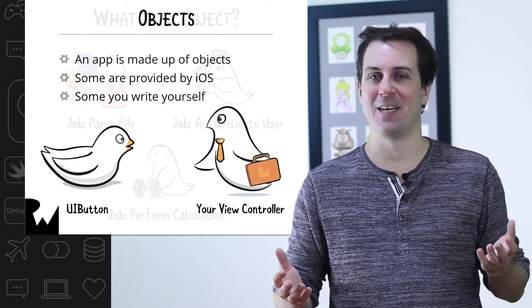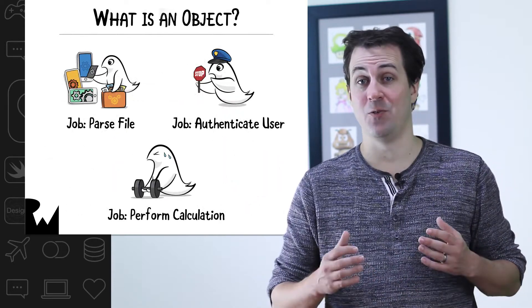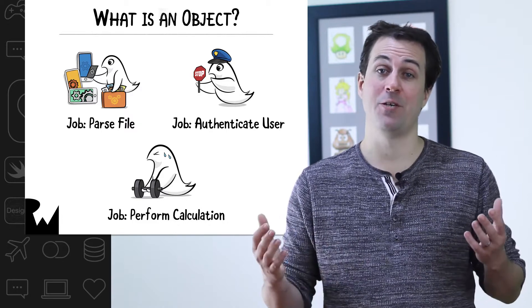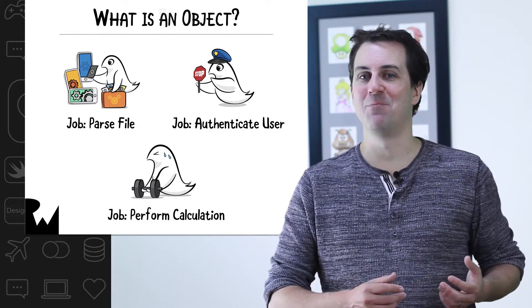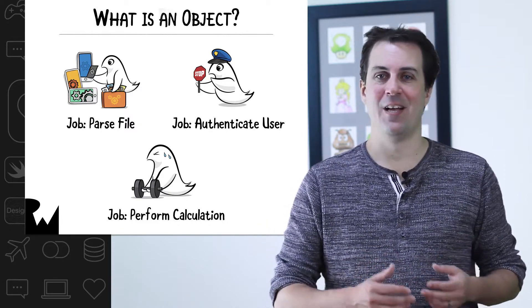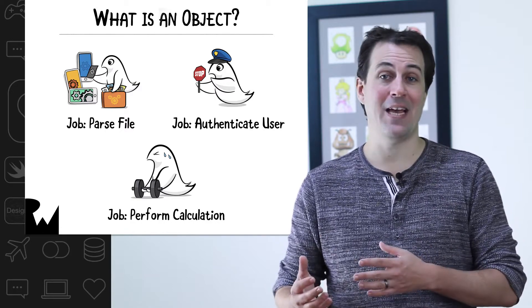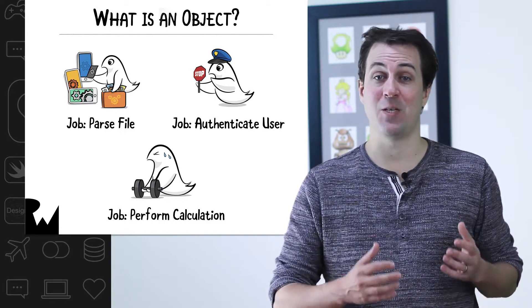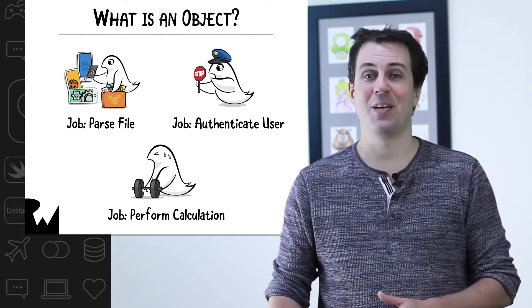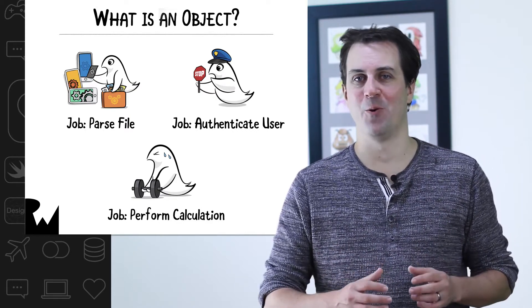But what is an object exactly? Programmers like to group related functionality into objects, which each have a particular job. For example, you might have one object whose job it is to parse a file, another object whose job it is to authenticate the user, and a final object that's responsible for performing a tricky calculation. Each object takes care of a particular part of the program.